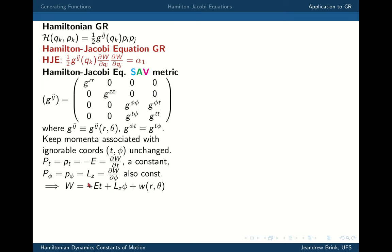Taking that solution and differentiating with respect to phi, we get that DW/Dphi is a constant, so the arbitrary function is no longer a general function of R, theta, and phi, but has the form: W equals minus ET plus LZ*phi plus an arbitrary function of R and theta. You can verify that DW/DT = minus E and DW/Dphi = LZ. That is the most general W obeying both conditions.